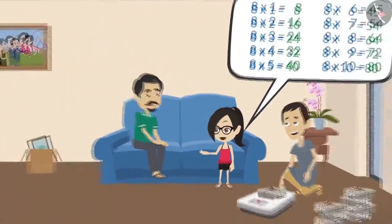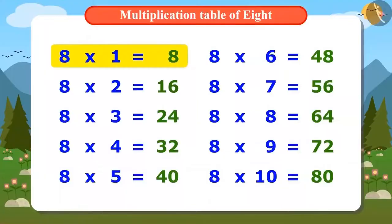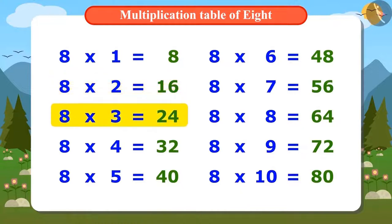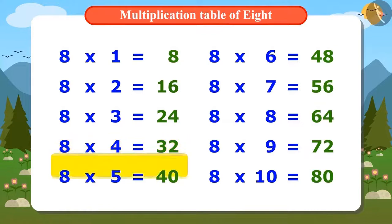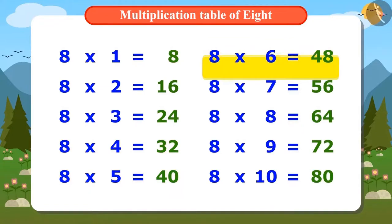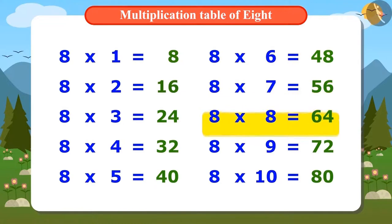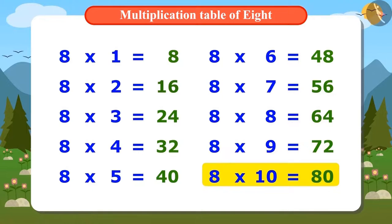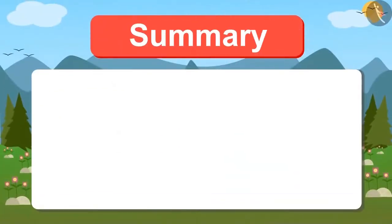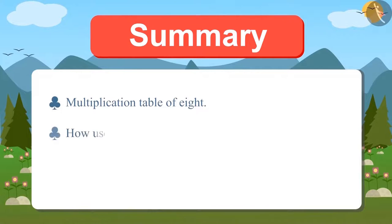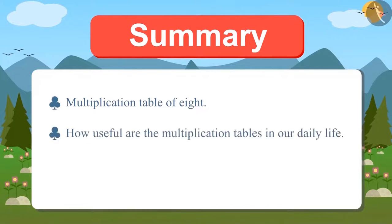Vandana has even started singing the table. 8 ones are 8, 8 twos are 16, 8 threes are 24, 8 fours are 32, 8 fives are 40, 8 sixes are 48, 8 sevens are 56, 8 eights are 64, 8 nines are 72, 8 tens are 80. Today we have learned the multiplication table of 8 and how useful multiplication tables are in our daily life.